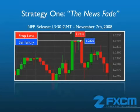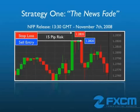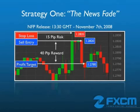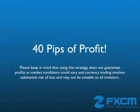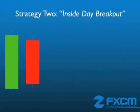We could have closed out our trade around 1.2780 for a profit of 40 pips. On this strategy, we probably would have set our stop just above this high, around 1.2835, so even if the price action continued in an upward direction, we would have been stopped out for a loss of only 15 pips. That's a pretty good trade — we risked 15 pips for the potential to make 40 pips or more. Please keep in mind that using this strategy does not guarantee profits, as market conditions could vary, and currency trading involves substantial risk of loss.